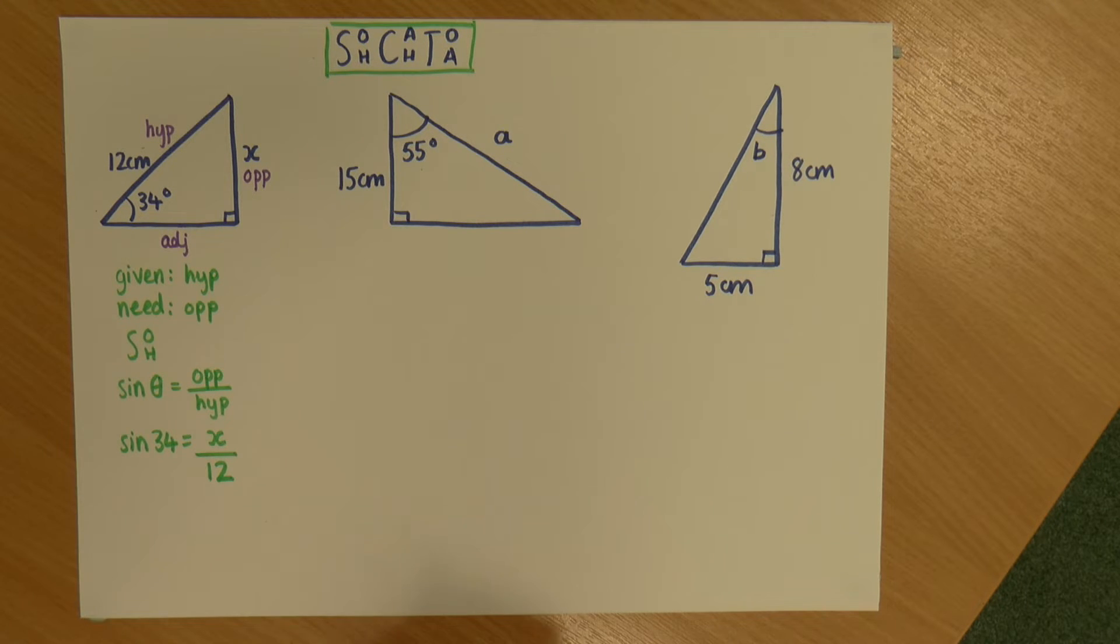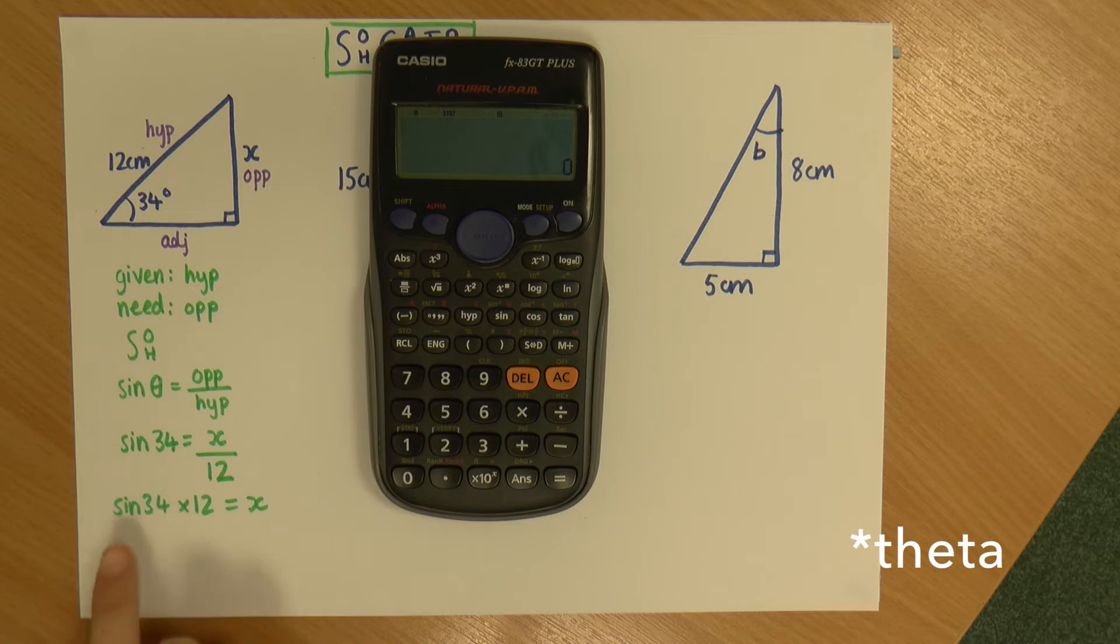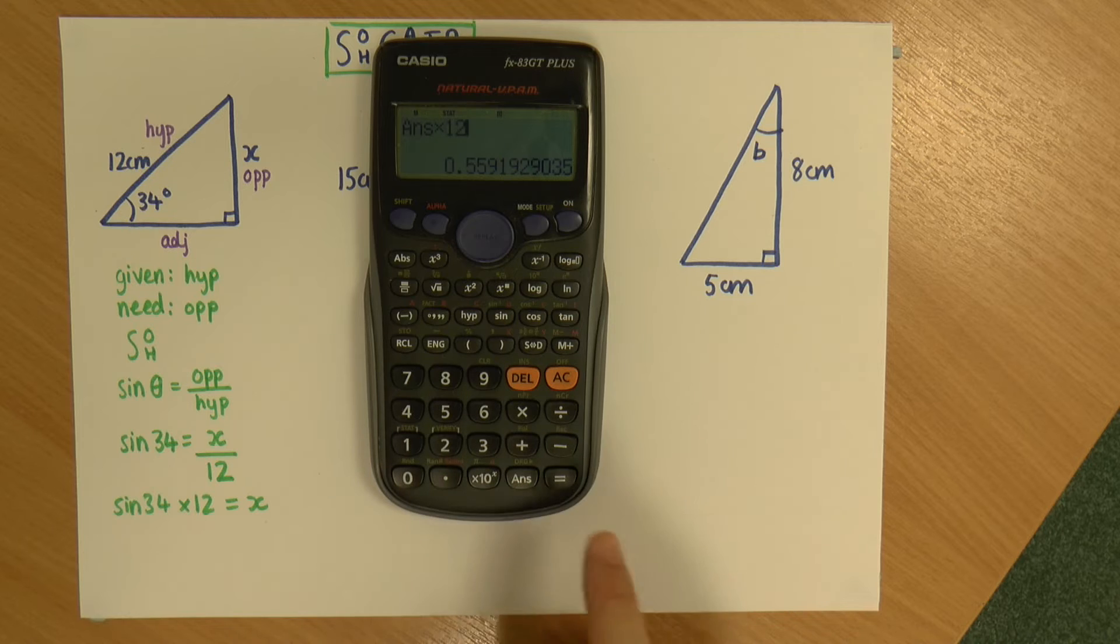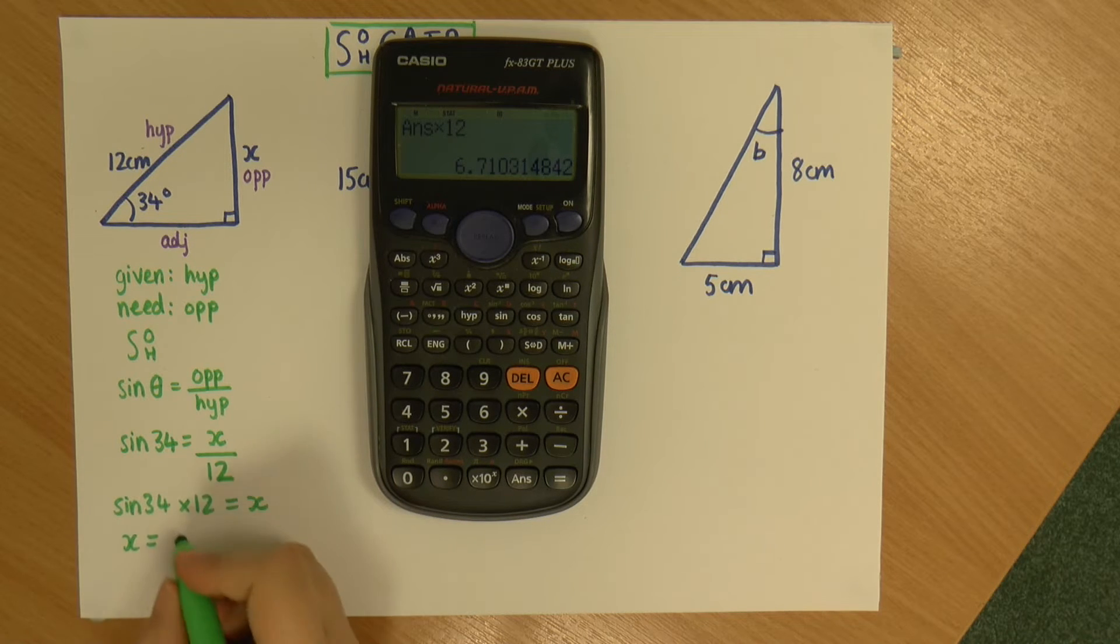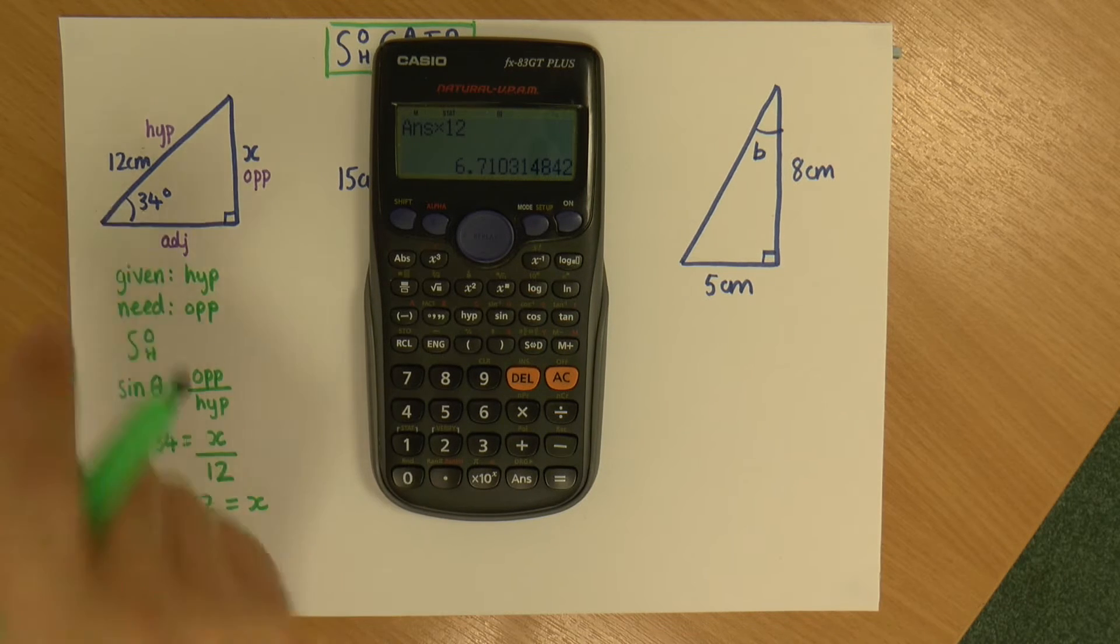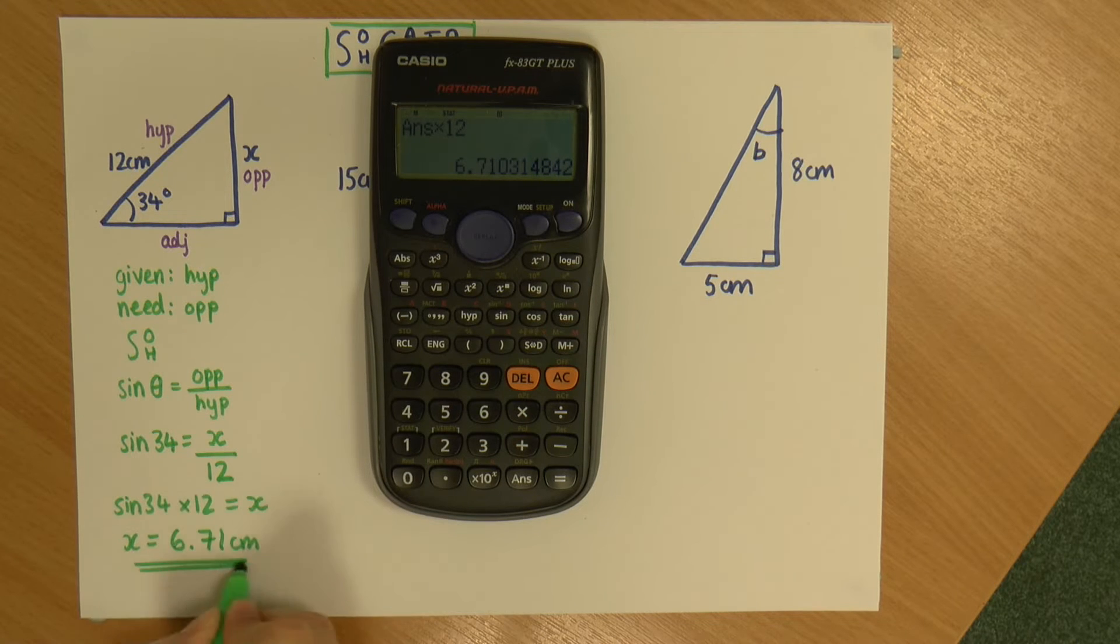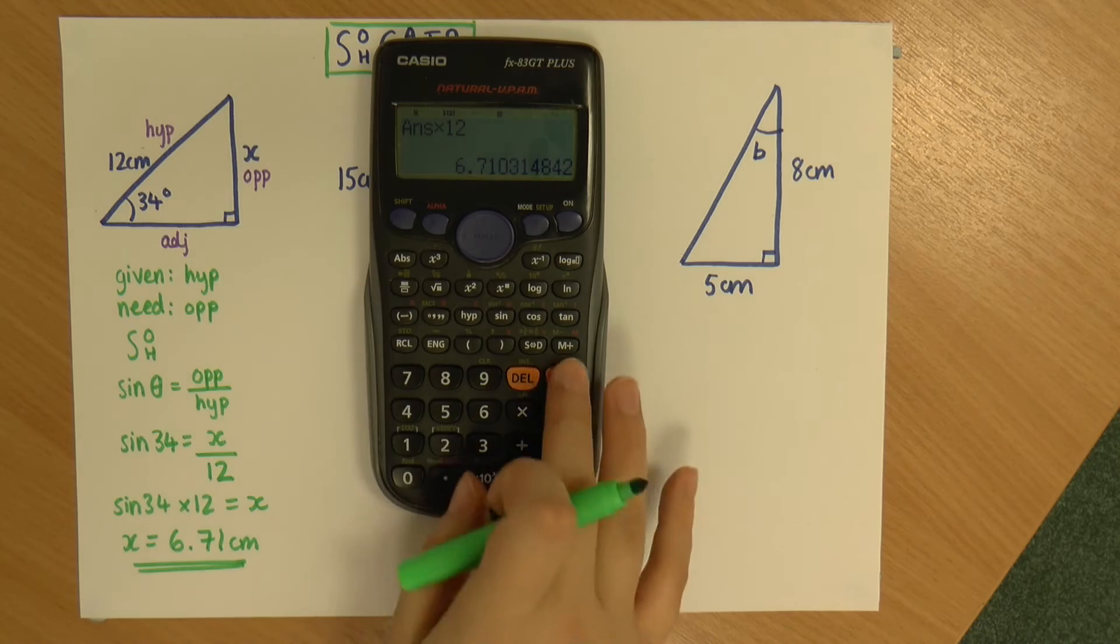Okay, so now I need to rearrange this equation to give me X on its own. So I need to times both sides by 12. And if you're not sure what you're doing here, go and have a look at my videos on rearranging equations. But because we've got a division here, we are multiplying both sides by 12, we're doing the opposite. So that gives me sine 34 times 12 is X. So you will need a calculator for these. So I'm going to do sine 34, and I can press equals if I like, times 12. There we go. So sine 34 times 12 gives me X, and X is 6.71 centimeters. So that's the first one done, where we've found the length of the opposite.